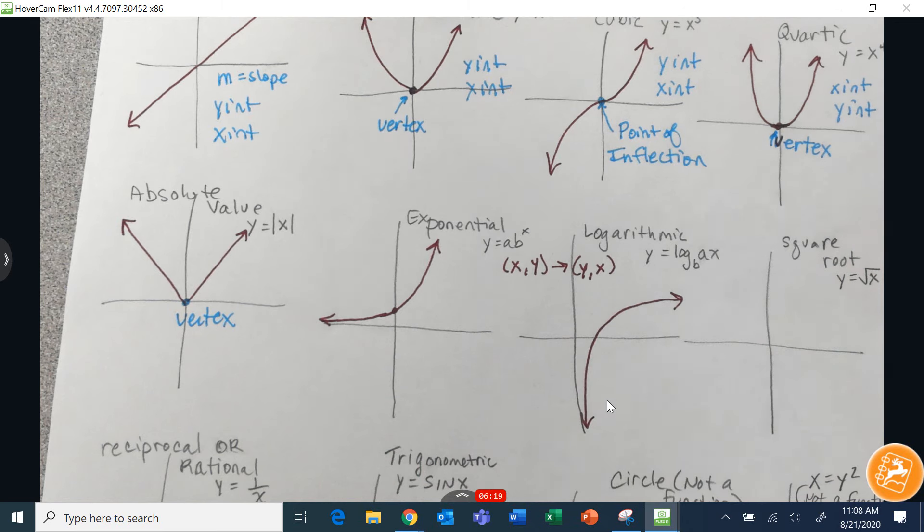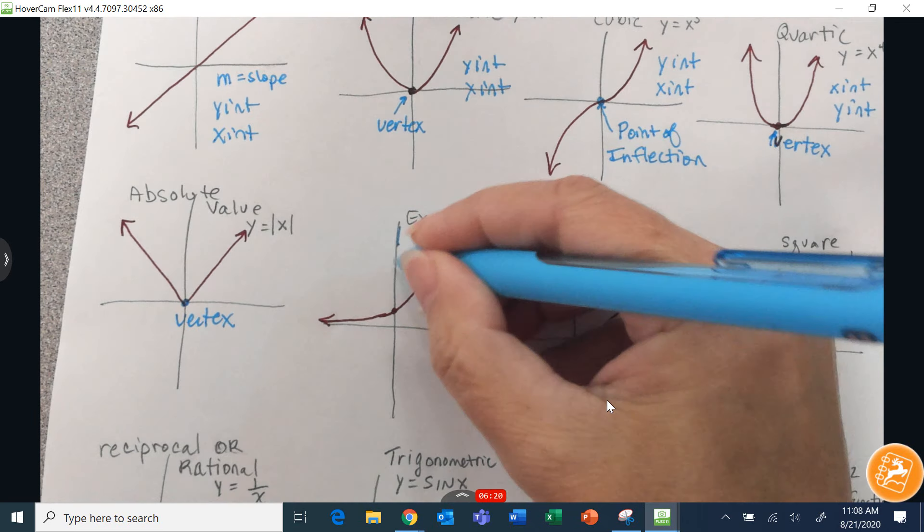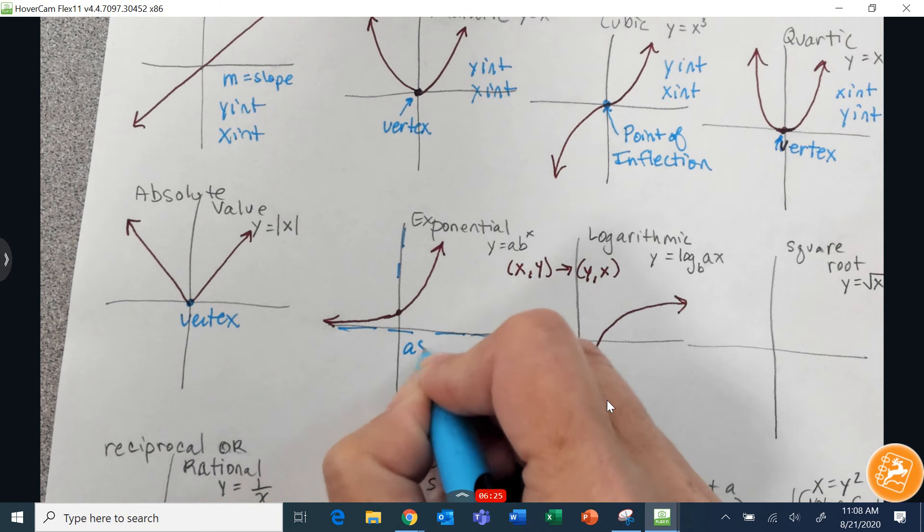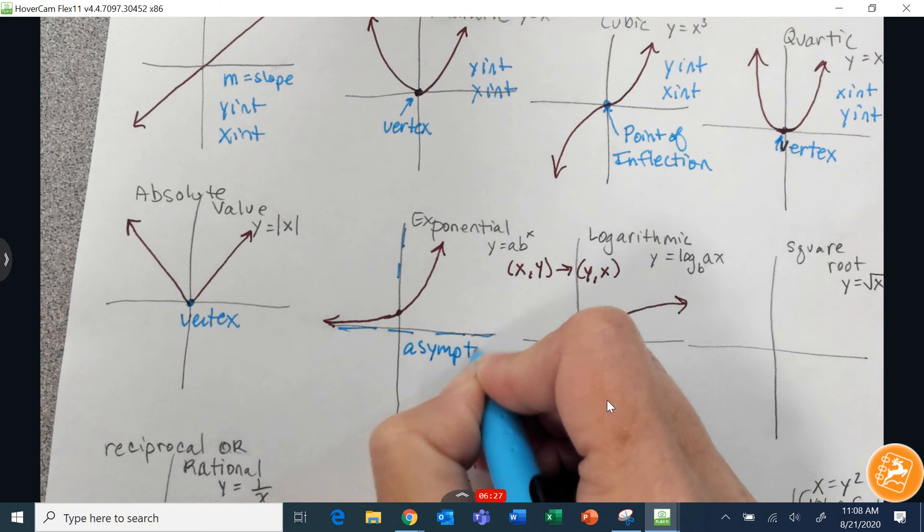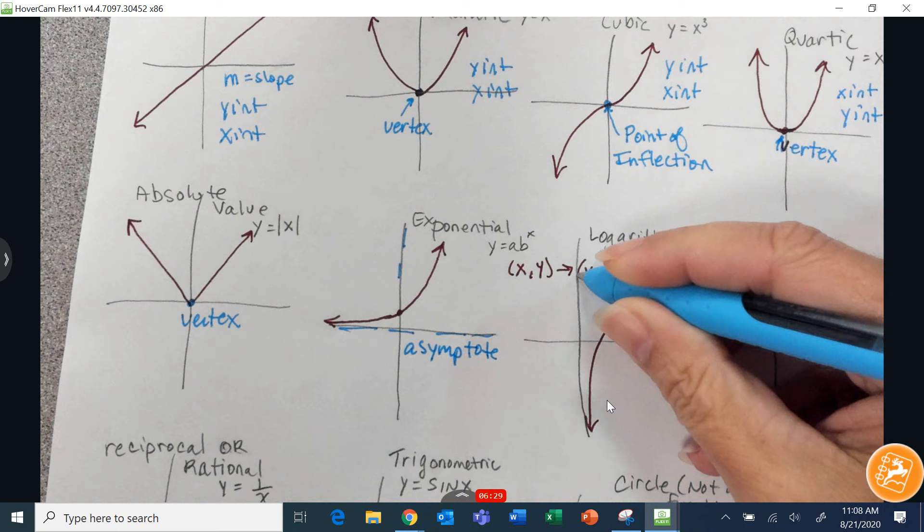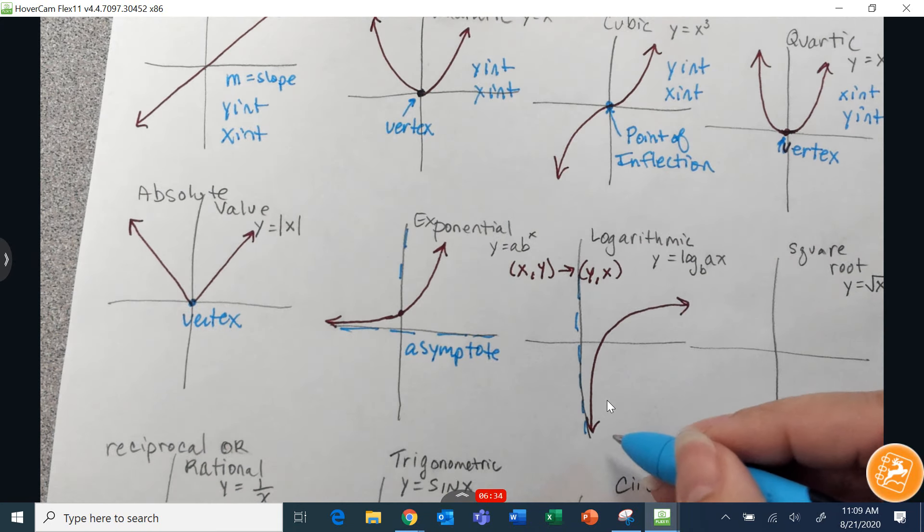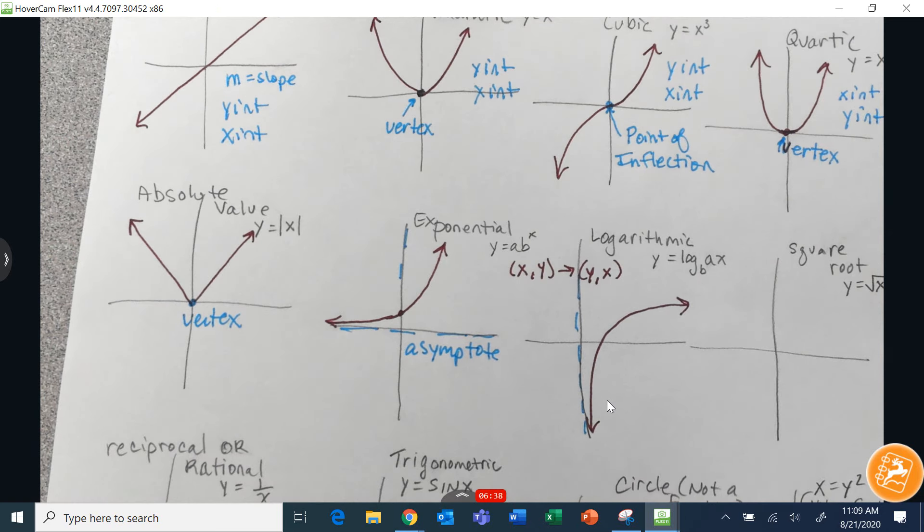However, there really isn't any special information about these other than x-intercept, y-intercept. However, these have asymptotes. Oops, and that is not the asymptote. It is here. Sorry about that. Asymptote. And that's that line that the graph is approaching, but it never really ever reaches that line.